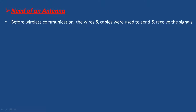Need of an antenna: Before wireless communication, wires and cables were used to send and receive signals. Wireless communication uses the same technology. The wires and cables are used to receive the signals, and the communication works like a wire connection for distance communication.